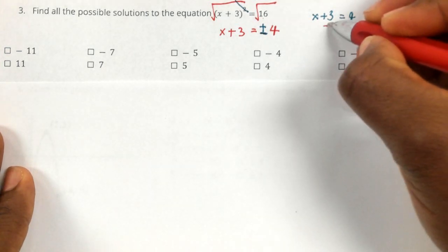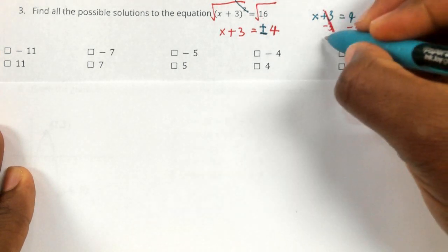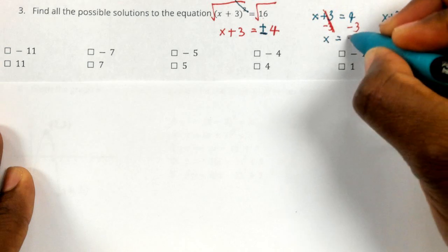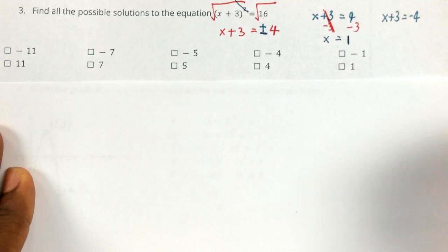So I'm going to subtract three, subtract three. So in this first case, your X is one, because four minus three is one.